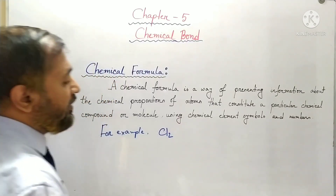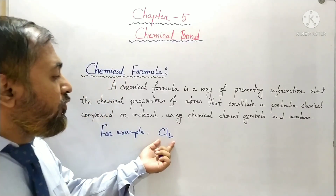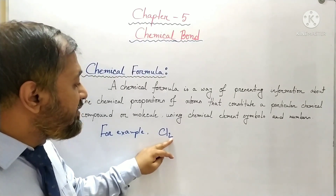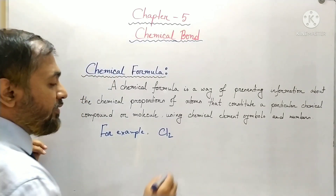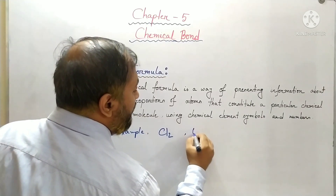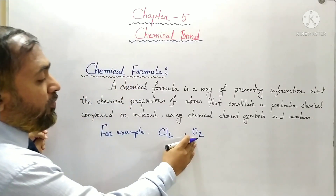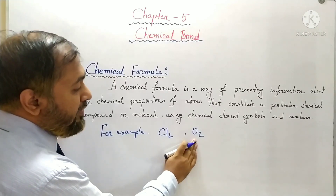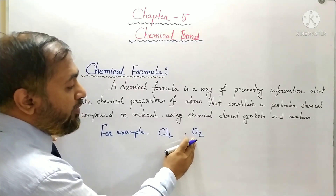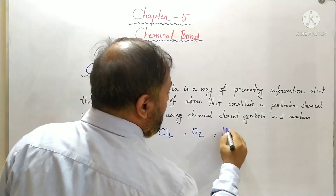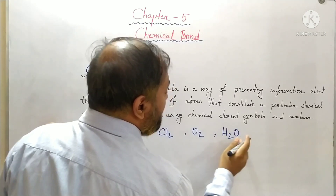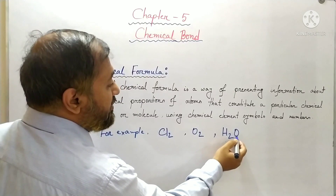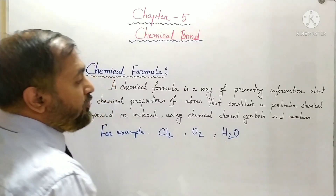For example, Cl₂ is the formula of a chlorine molecule — here two chlorine atoms are present, and 2 is the number of chlorine atoms. Similarly, we can write O₂, the chemical formula of an oxygen molecule where two oxygen atoms are present. Similarly, H₂O is the formula of a water molecule, where two hydrogen atoms and one oxygen atom are present.